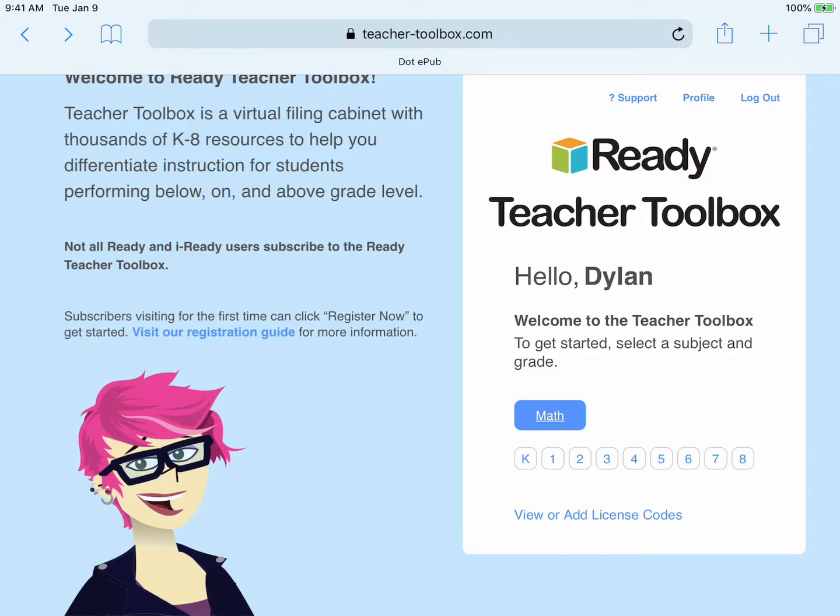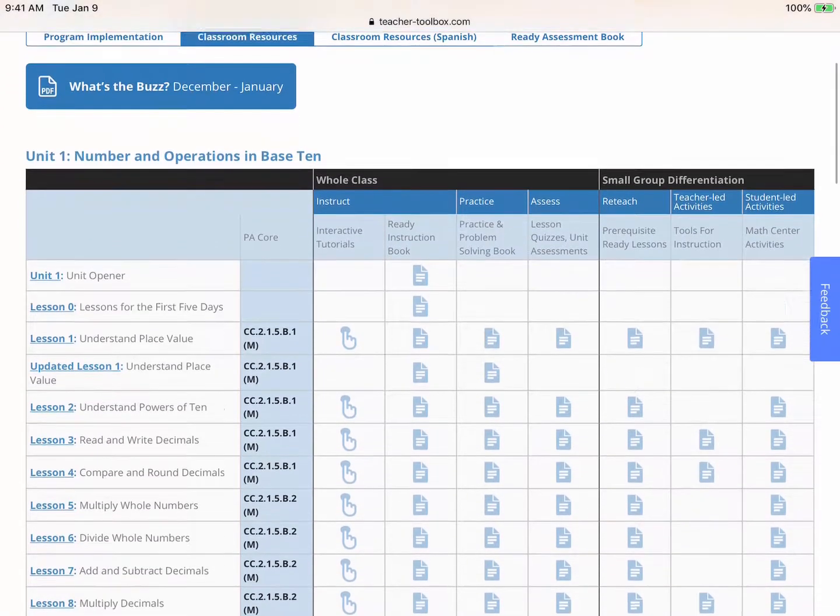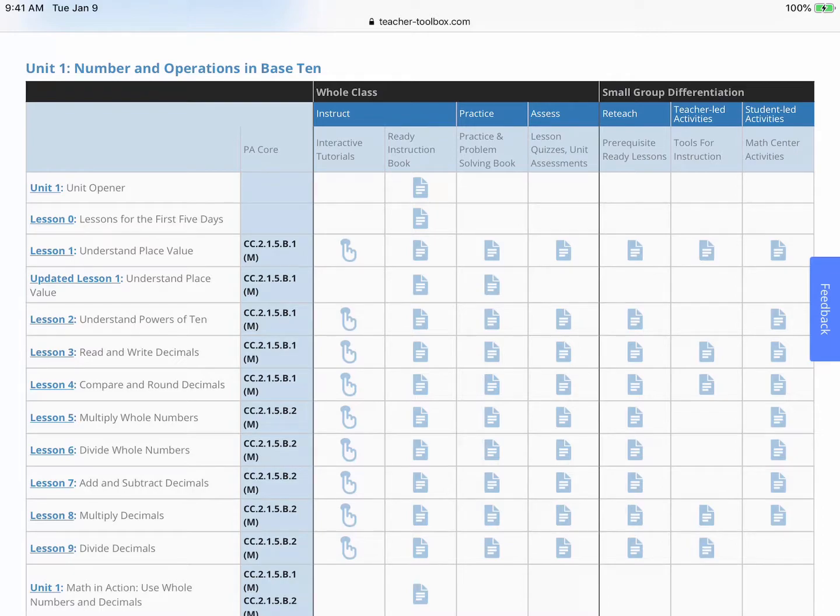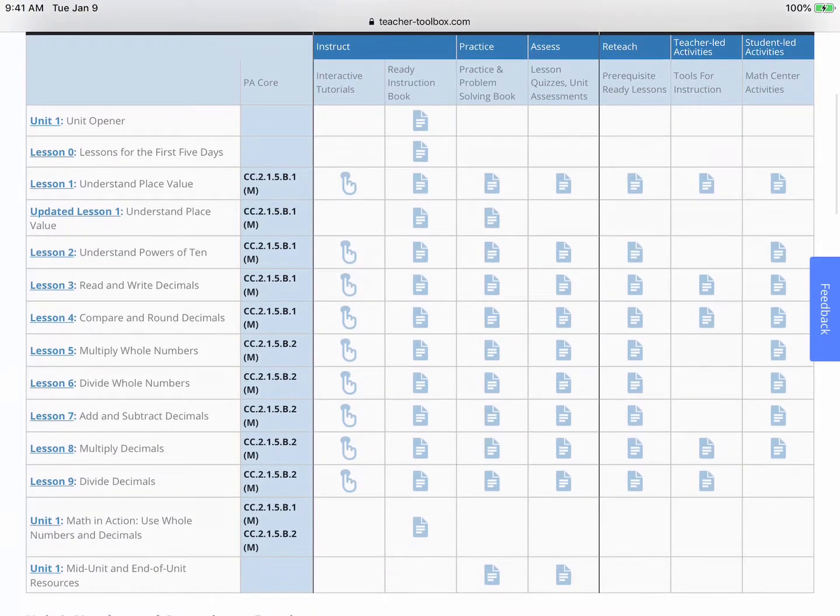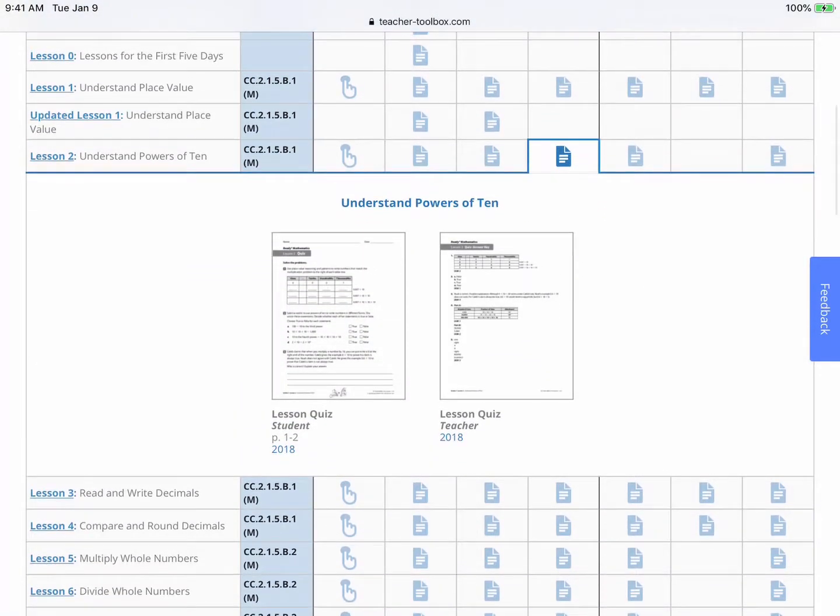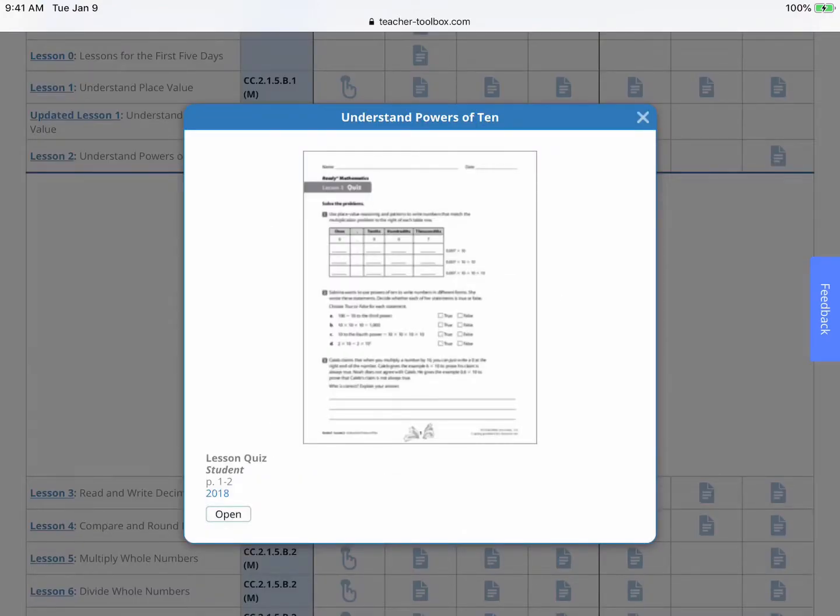I'm going to tap math, I'm going to go to fifth grade, and I'm going to find the item that I'm going to annotate over top of. With this I'll go into lessons about the powers of ten here. I'll do the student version and tap on open.